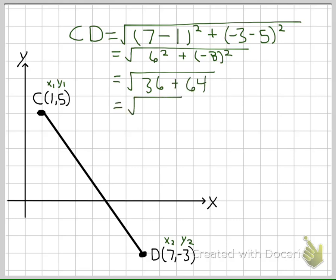I combine my two terms: 36 and 64 gives me 100. And then the square root of 100 is 10. So I have that CD is 10 units in length.